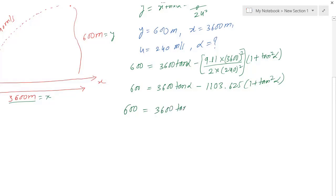This can be further simplified: 600 equals 3600 tan alpha minus 1103.625 minus 1103.625 tan squared alpha.